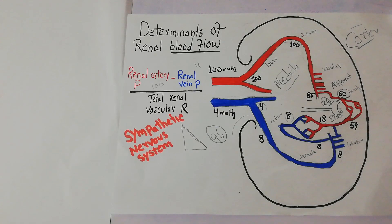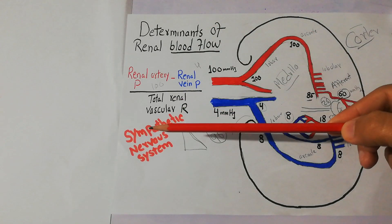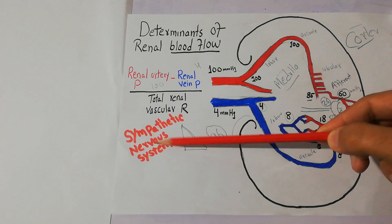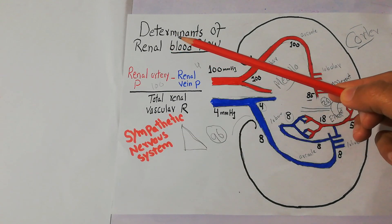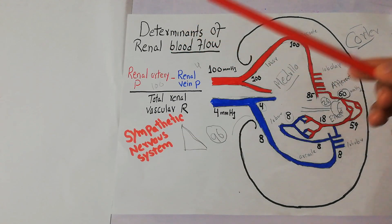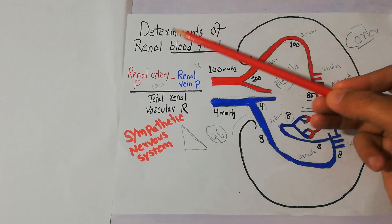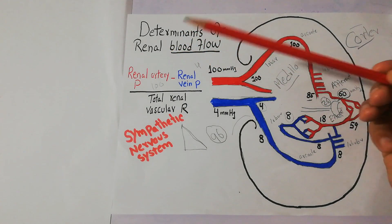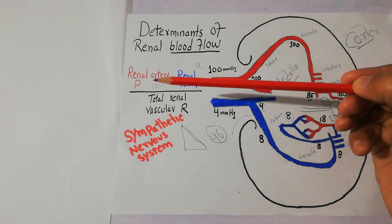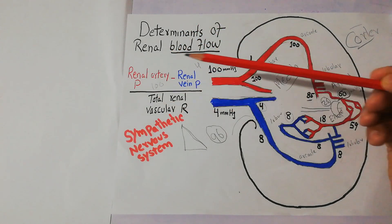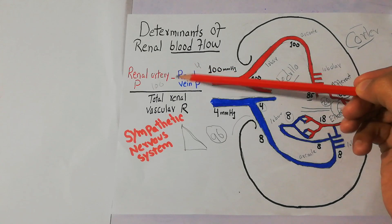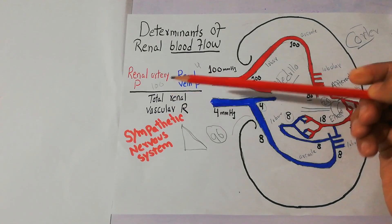Today in this lecture we are going to talk about concepts related to effects of the sympathetic nervous system on renal blood flow. In our last lecture we talked about determinants of renal blood flow and we discussed how to calculate the renal blood flow by calculating the pressure gradient and total renal vascular resistance.